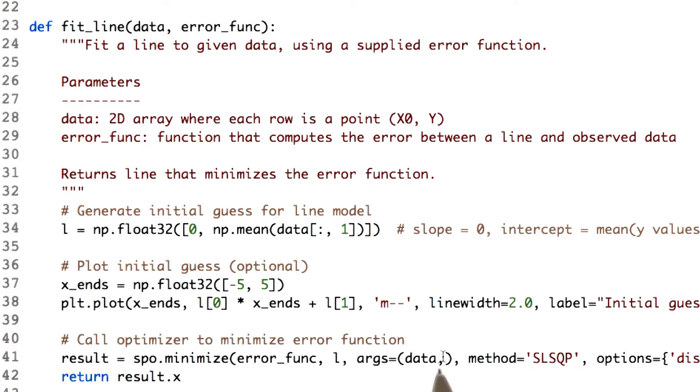But this is a way by which we can pass the data to our error function. This is the method that we're going to use. And finally, although it goes off the end here, we'll set display to true, which will mean we'll get to see any information as it goes along.